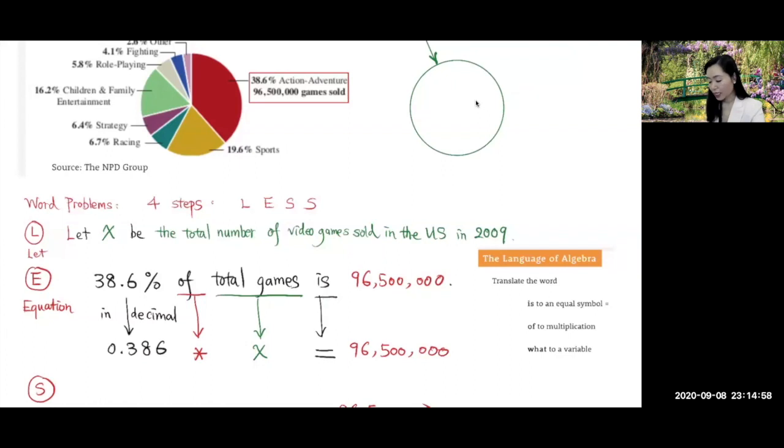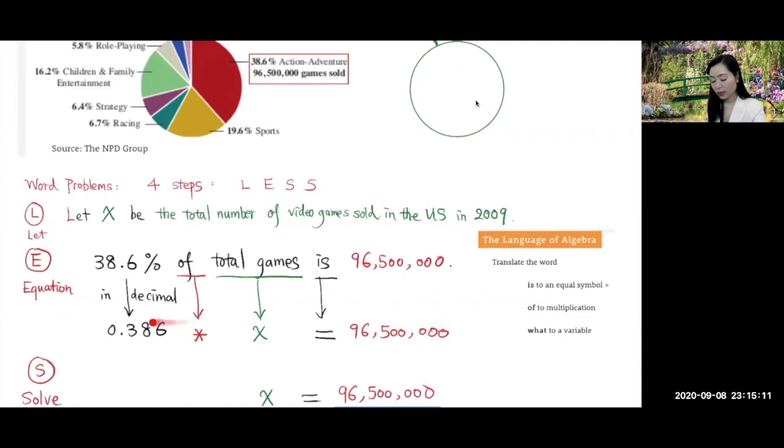Is translates into the equal sign. So equals 96,500,000. Now we got an equation by using this information.